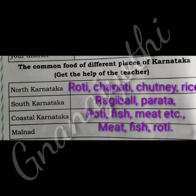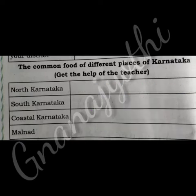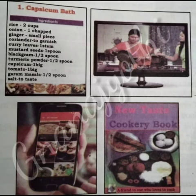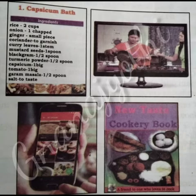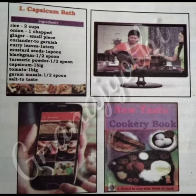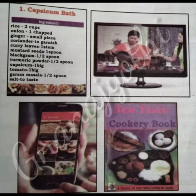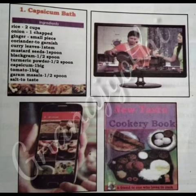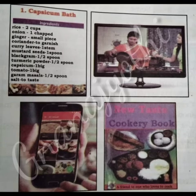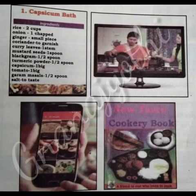Some statements about the factors which decide the food we take are given. Observe. Although we are of the same state, our food system is based on the climate and the food materials available or grown in the region where we live. The food we eat is also decided by the tradition or beliefs of a particular family. Our food changes according to the seasons like summer, rainy, and winter. Although all these factors influence our food, nowadays our food habits are becoming similar.